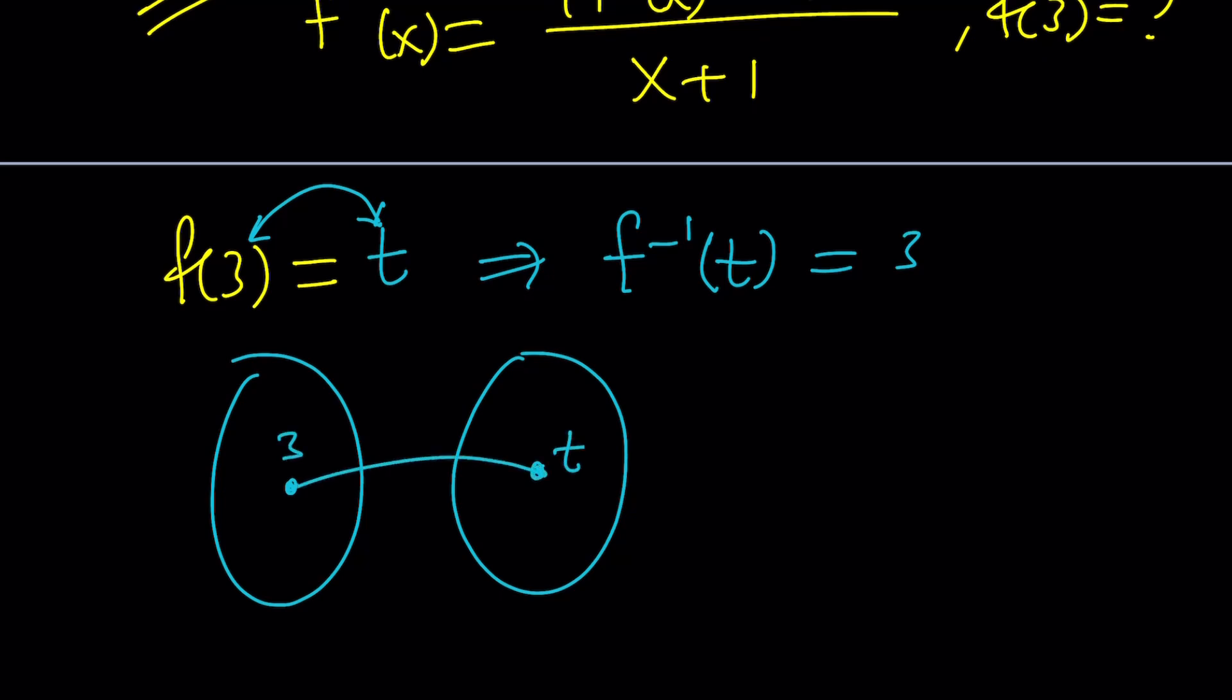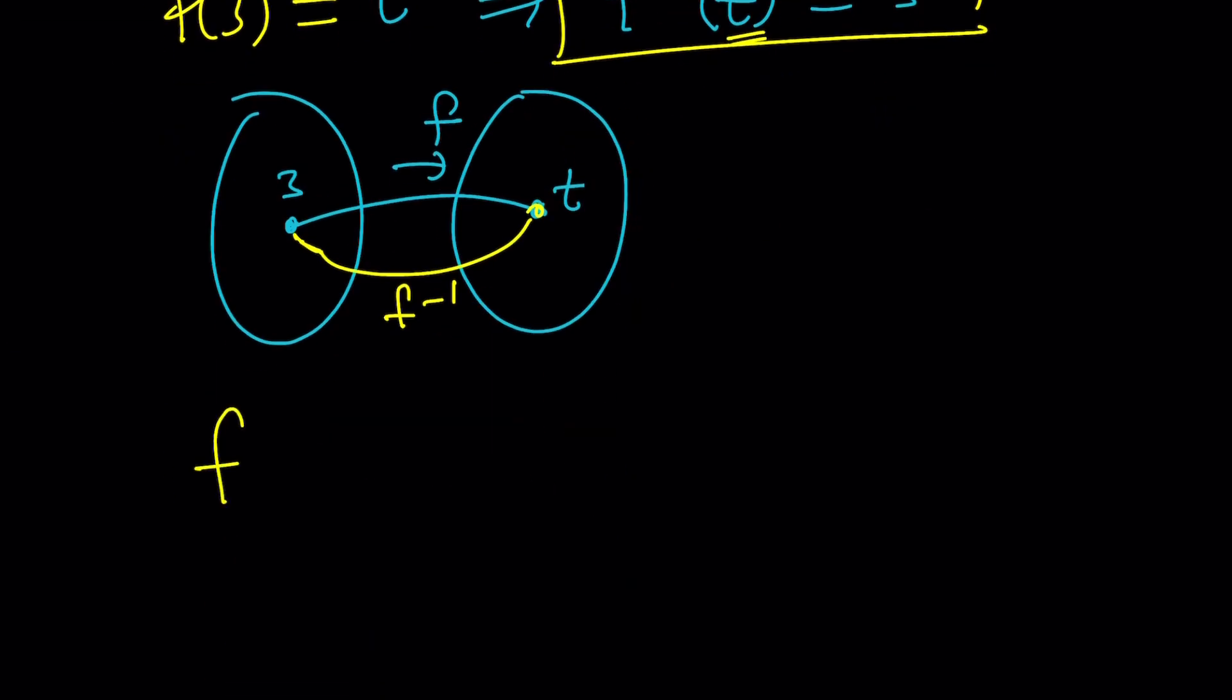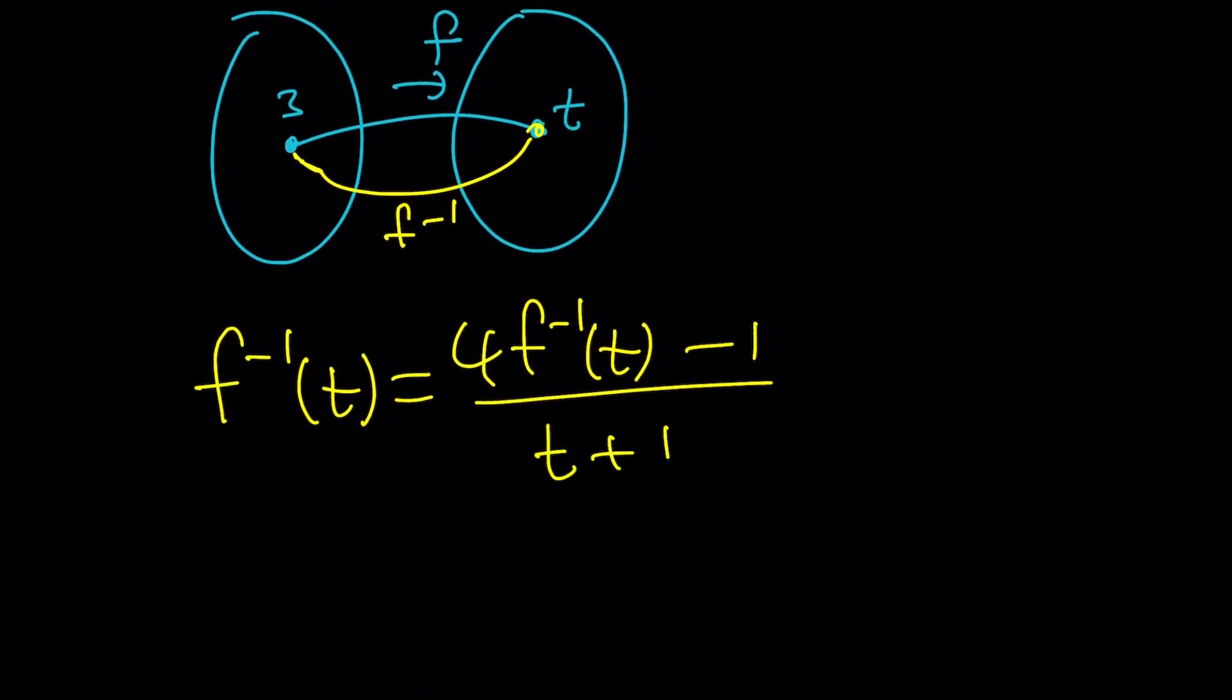So if you think about the inverse function or kind of like a pre-image, you're going to take the 3 to t, like map it to t through f. And f inverse is just going to do the opposite. Make sense? It's going to be f inverse, which is mapping t to 3. That's why f inverse of t is 3. Make sense? Great. This is going to be helpful. So to get to that, since we have f inverse of x, what does that mean? That means replace x with t everywhere. That gives you f inverse of t equals 4 times f inverse of t minus 1 over, remember, x is being replaced by t, so you get t plus 1.